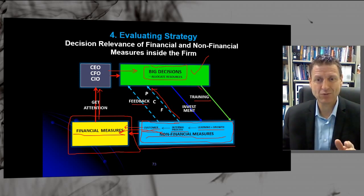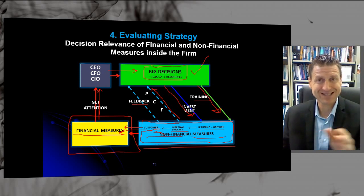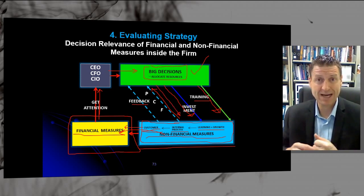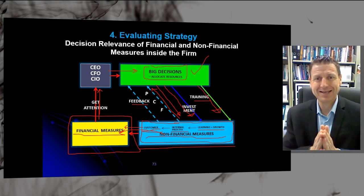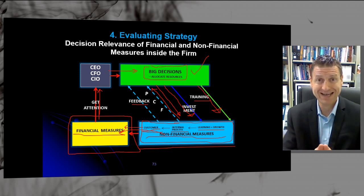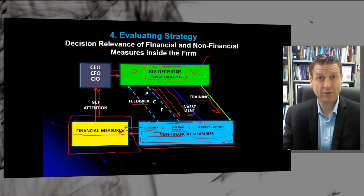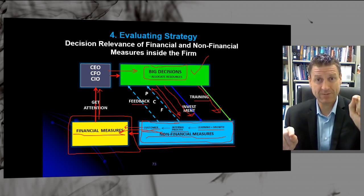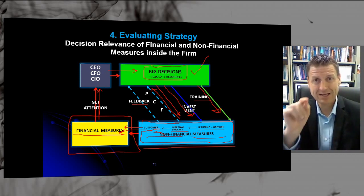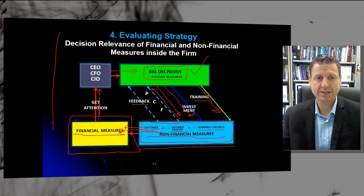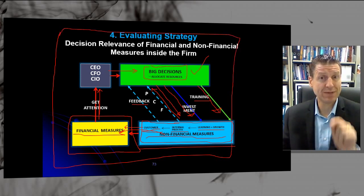Ultimately, the big decisions can result in: let's do more training, let's invest in robotics or more machinery because we can see the linkage to the bottom line, or let's invest in more customer engagement or enter a new market. At the end of the day, you want big decisions to be made by the big managers about the allocation of resources. As a middle-level manager or below, you need to link your initiative to a financial bottom line result to get their attention, get the green light, and secure funding. This is the decision relevance of financial and non-financial measures inside the firm.